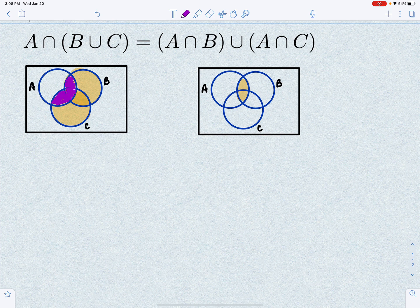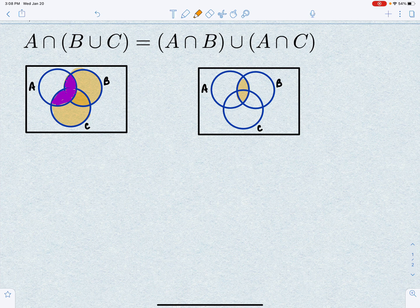Anything that was shaded orange, that's also inside of A. And A intersect C would be anything in here. And you notice that we have the same region shaded.